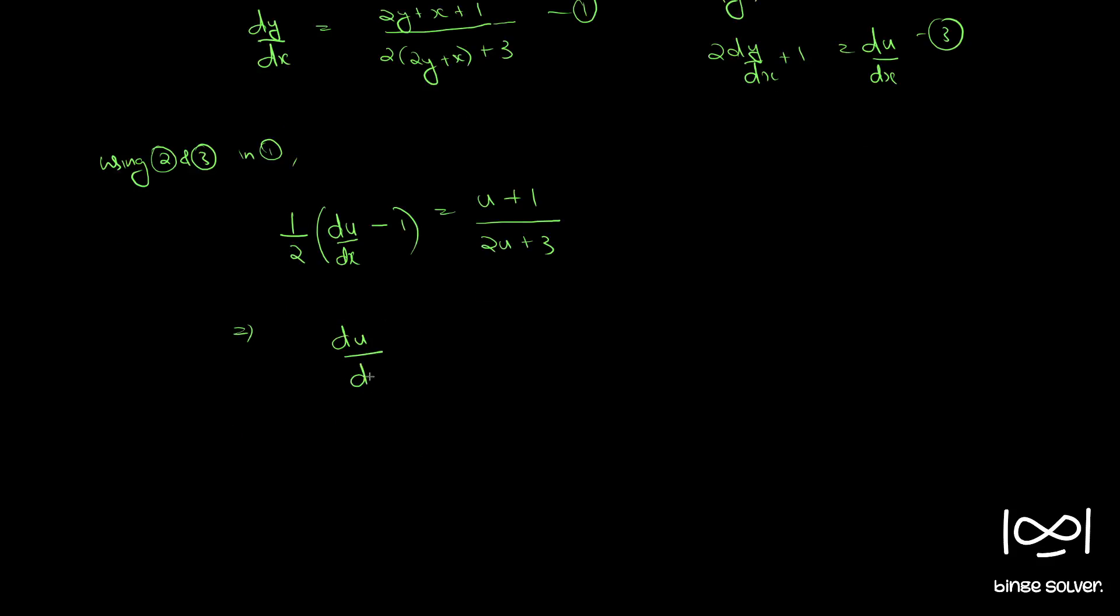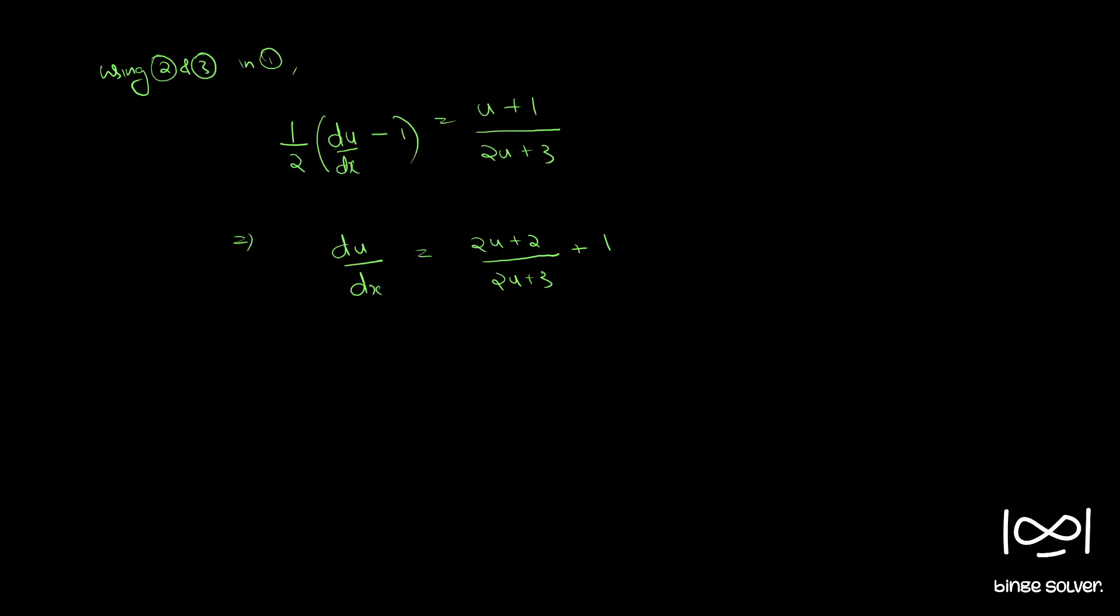Du by dx equal to 2u plus 2 by 2u plus 3. We took 2 to this side multiplied with u plus 1, which is 2u plus 2, and brought 1 to the RHS. So which is 2u plus 2 plus 2u plus 3 by 2u plus 3. Therefore du by dx equal to 4u plus 5 by 2u plus 3.